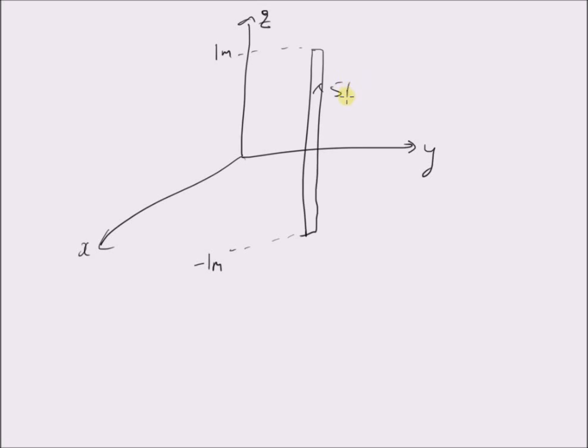A current of 5 amperes flows in the wire and the wire is 2 meters long. The distance from the z-axis to the wire is 4 centimeters.